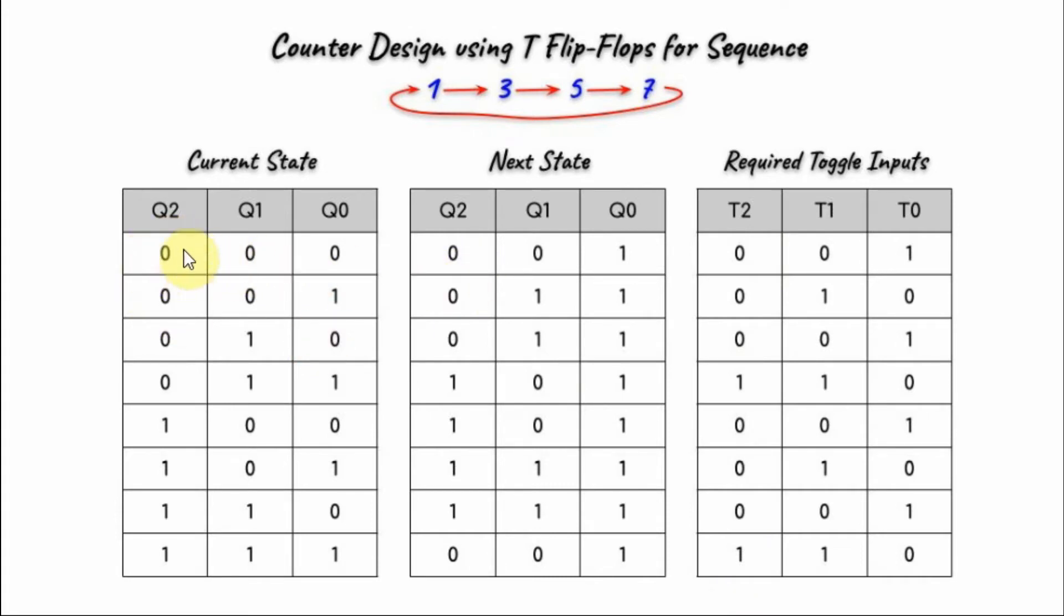If the current state Q is 0 and the next state is 0, there's no toggle, so the input should be 0. If the current state is 0 and the next state is 1, we toggle, so the input must be 1. Similarly, if we have 1 in the current state and 0 in the next state, we toggle, so the input is 1.